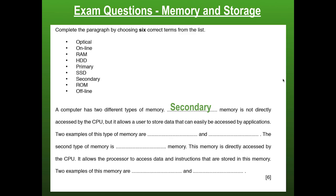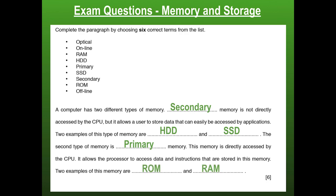The two main types of secondary memory are HDD and SSD — these are the two types of internal secondary storage. The second type of memory is our primary memory, which is directly accessed by the CPU and allows the processor to access data and instructions stored in memory. The two examples of primary memory are RAM and ROM. If you are not familiar with these, I'll put a link to my memory and storage video — this is a really important concept you definitely want to know for the exam.